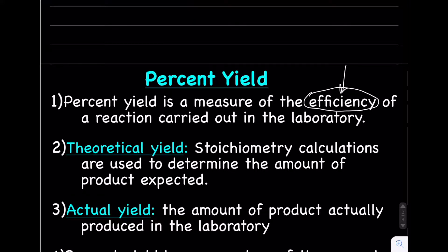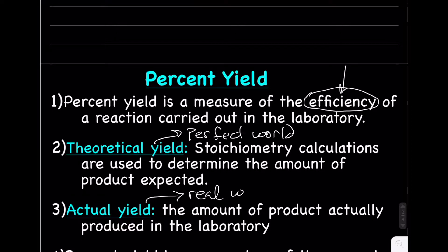Actual yield is the amount of product that was actually produced in the laboratory — so in the real world, not the perfect world. Theoretical yield is the perfect world where everything works out exactly as expected, which never happens. Actual yield is the real world.